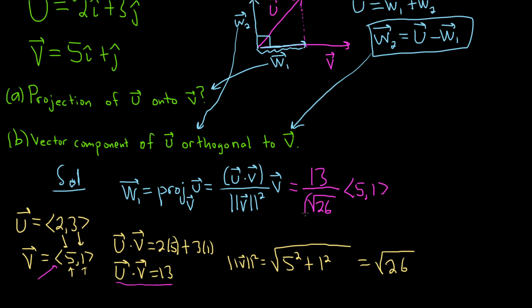Oh, you know what I forgot to do? I forgot to square it. There we go. That's an ugly answer. But now this is beautiful. Watch this. You square the square root of 26 and you get 26. Beautiful stuff. And 13 over 26 is 1 half. So this is 1 half times 5, 1. Then distribute the 1 half. So this will be 5 halves comma 1 half. And that will be the projection of u onto v.